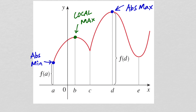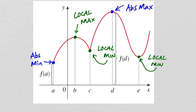We also have a local minimum right here for the same reason — this point is lower than all the points immediately around it. And we have a local minimum over here for the same reason. Now, it's important to point out that this endpoint right here is not a local max, because there are only points to one side of it. To be a local maximum, it has to be higher than all the points near that point on both sides.